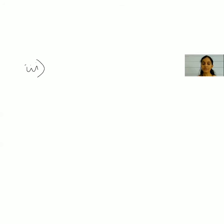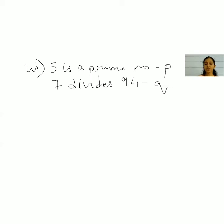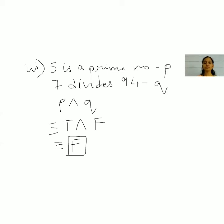The third one: 5 is a prime number and 7 divides 94. '5 is a prime number' is p — yes, truth value is true. '7 divides 94' is q — let's check: no, 7 does not divide 94, so truth value is false. True and false gives false, since the conjunction is true only when both values are true.